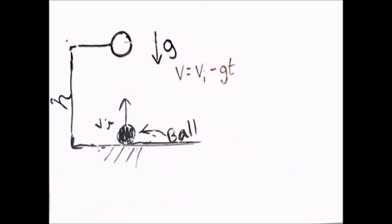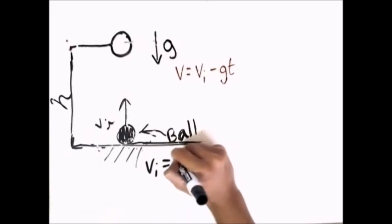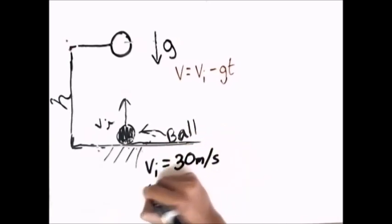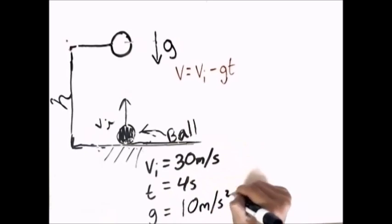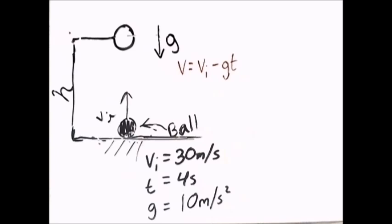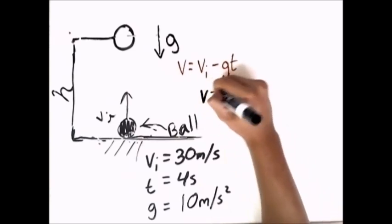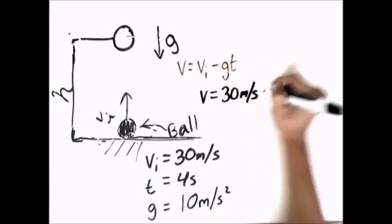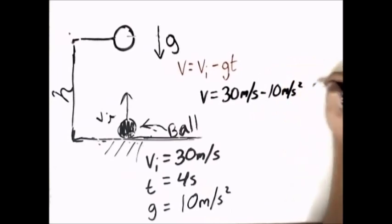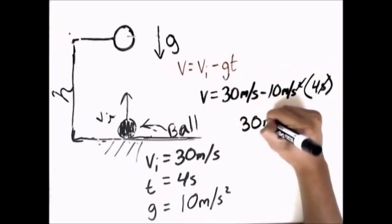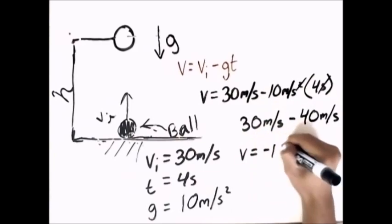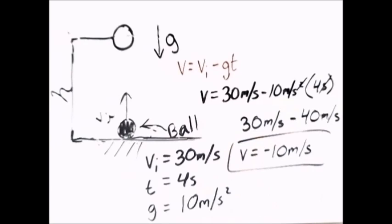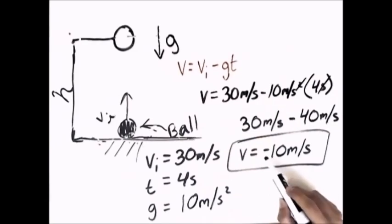Now let's find the speed at four seconds. Our initial velocity is still 30 meters per second, time is now four seconds, and acceleration remains 10 meters per second squared. Plugging in: v equals 30 m/s minus 10 m/s² times 4 seconds, giving us 30 minus 40 meters per second, which equals negative 10 meters per second.